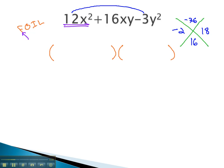You may notice there are several ways to multiply to 12x squared. One way might be 12x times x. However, remember the 12x must be multiplied by something to equal either negative 2 or 18.